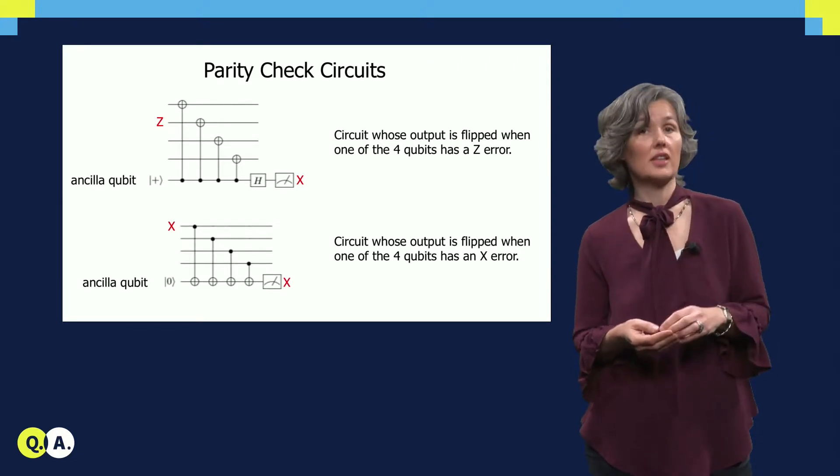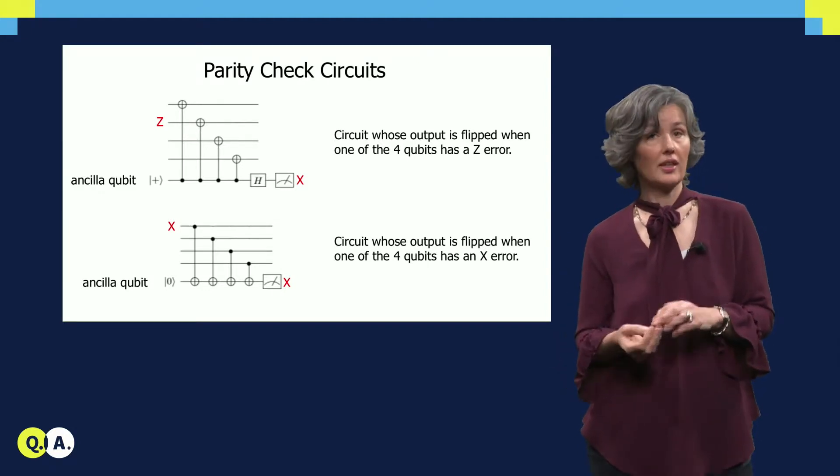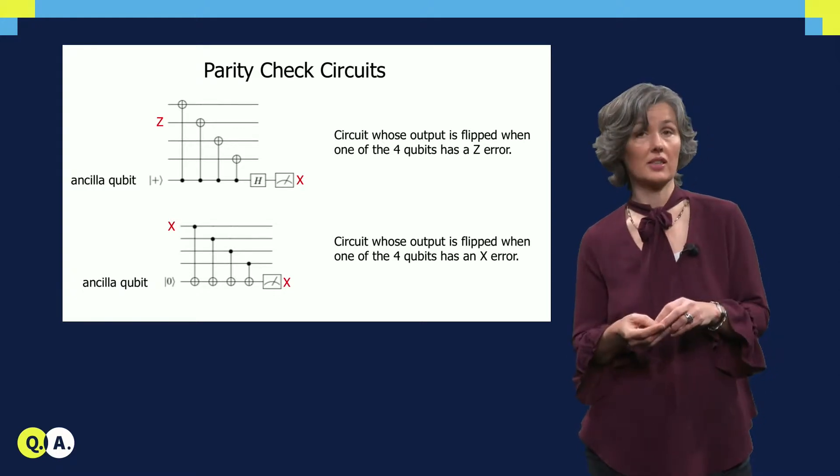Similarly, to detect and correct an x error, one can use the circuit at the bottom, whose ancilla qubit is flipped on output when any of the incoming qubits has an x error.